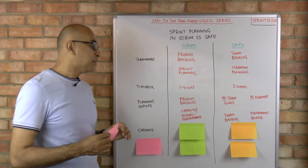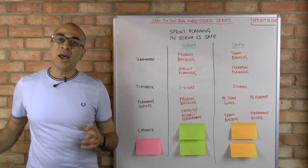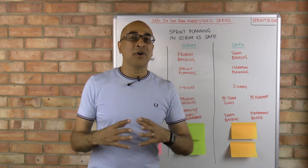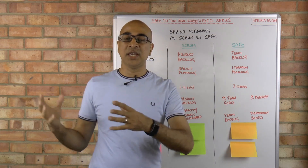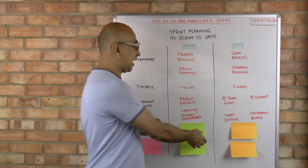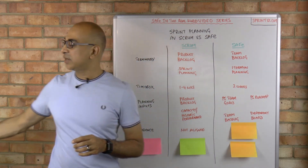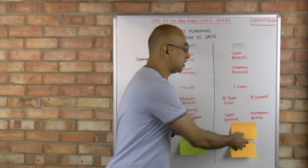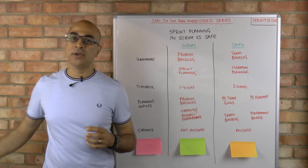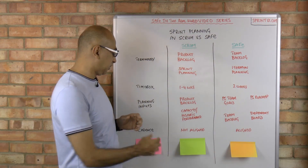The next difference is cadence. In Scrum we have the luxury of not having to worry about other teams and cross-team dependencies, so we can have our own cadence and we don't need to be aligned. Whereas in SAFe we need to have an aligned cadence.